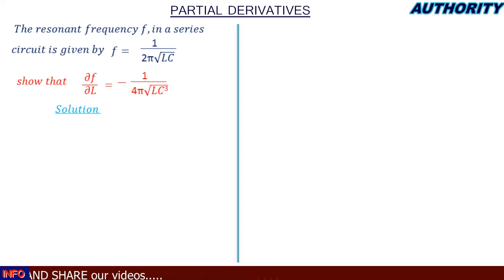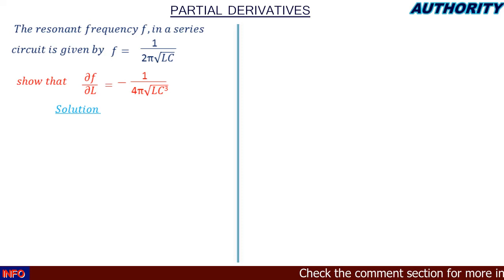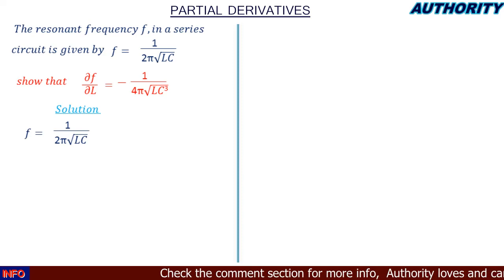Solution: what we are asked is to show that the partial derivative of f with respect to L is equal to −1 / (4π√(CL³)). We start with f = 1 / (2π√(LC)).